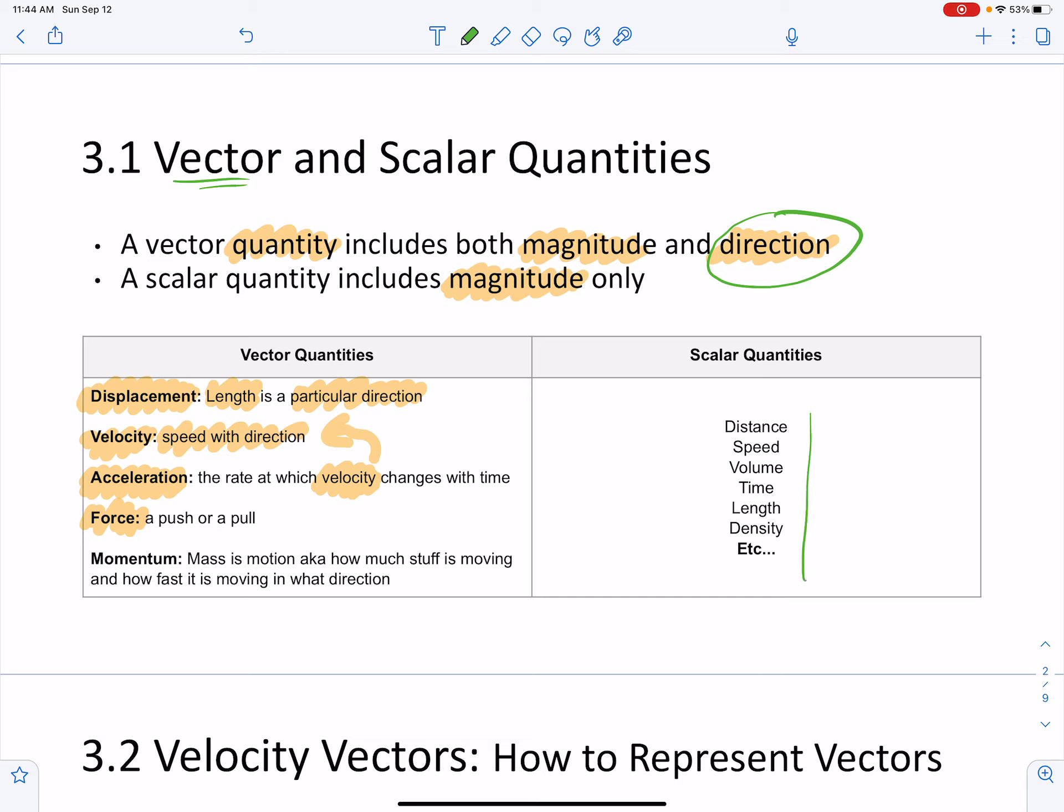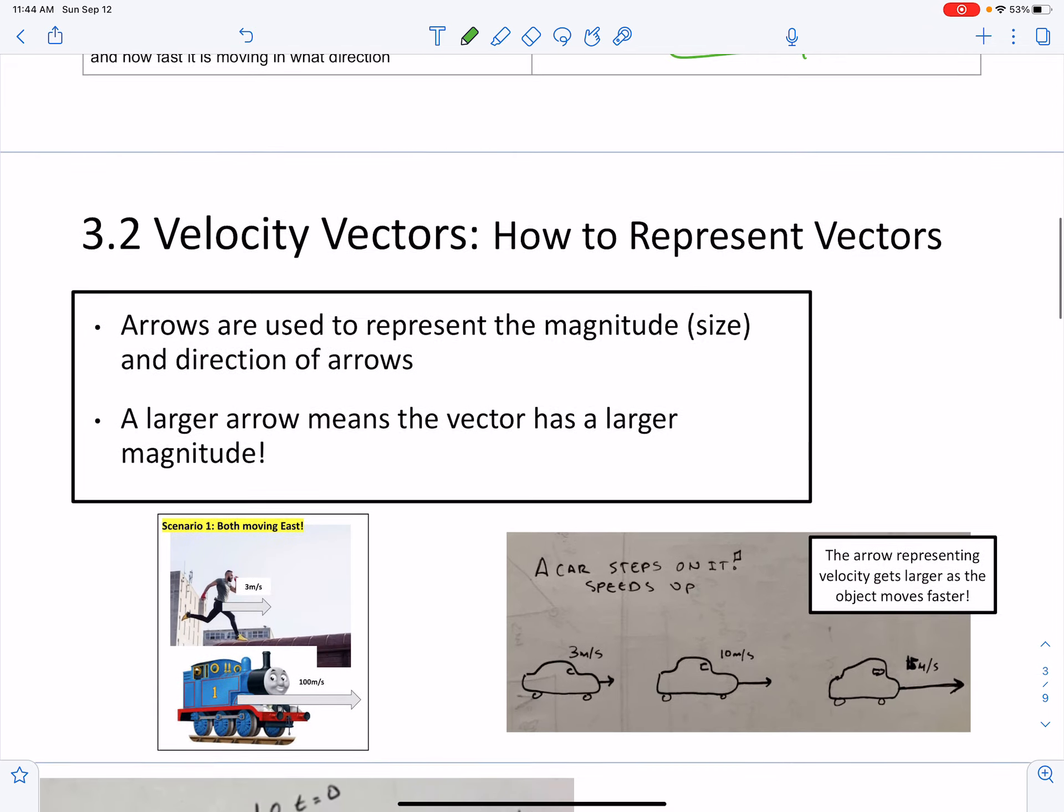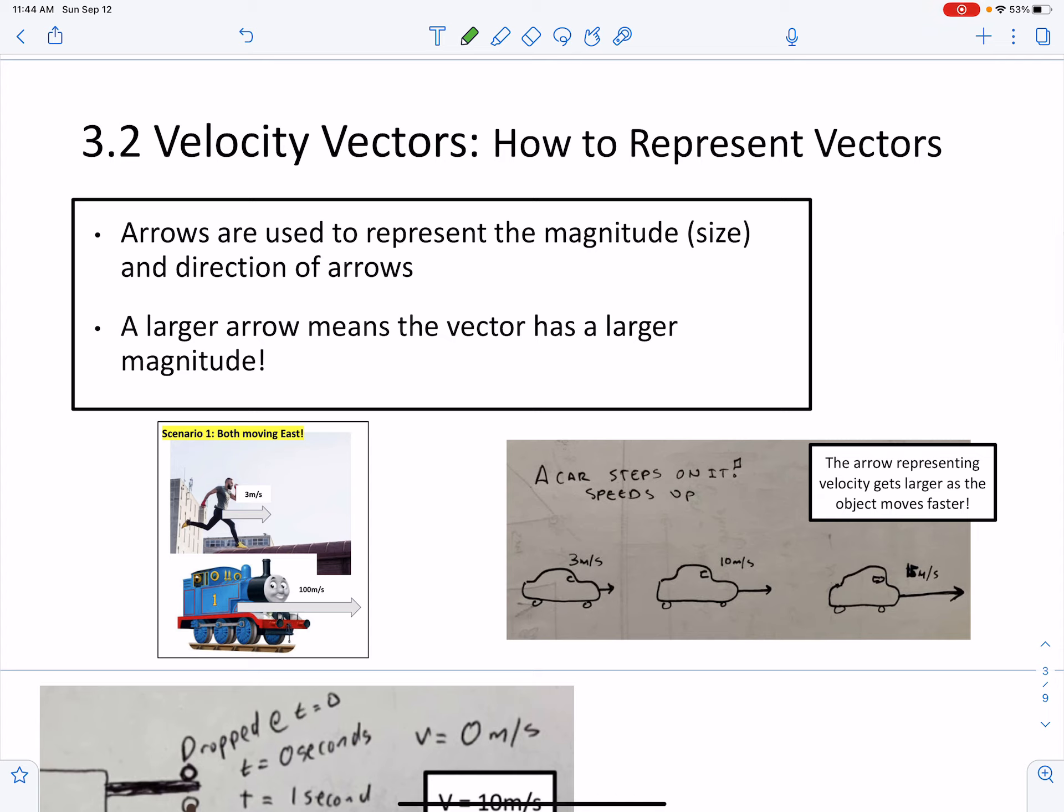Scalars: distance, speed, volume, time, length, density. Magnitude only, no direction. Alright, so why are we talking about vectors?